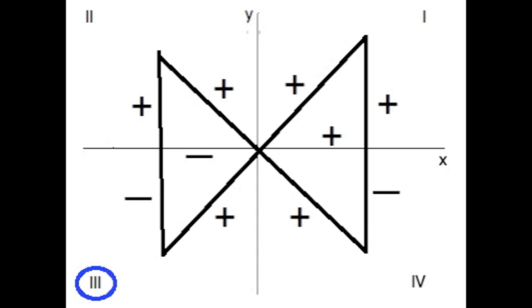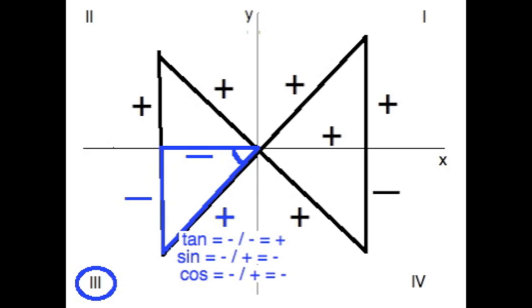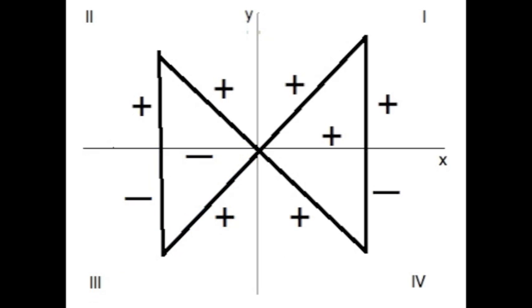So for instance, look at quadrant three. Tangent's positive, as you can see. Sine's negative, then cosine too. There's one last trick I'll give to you.